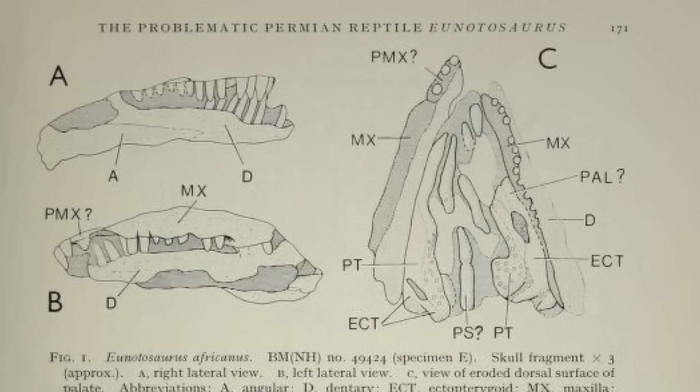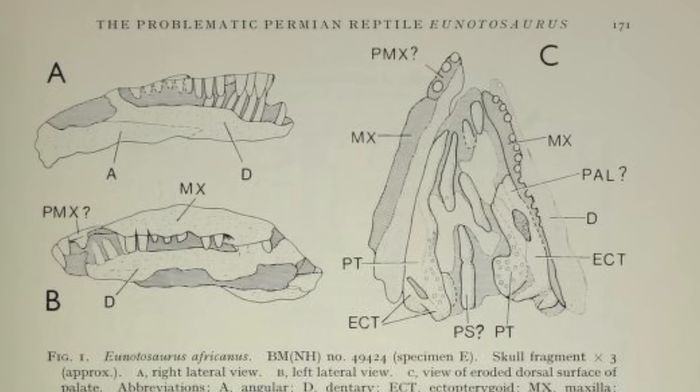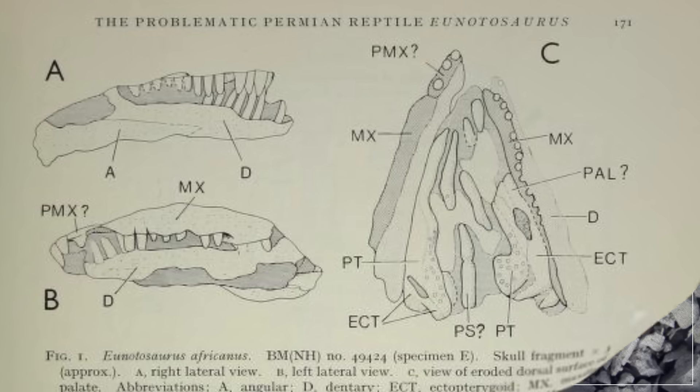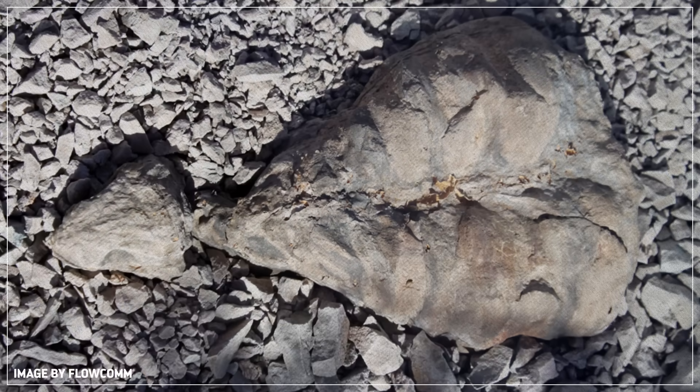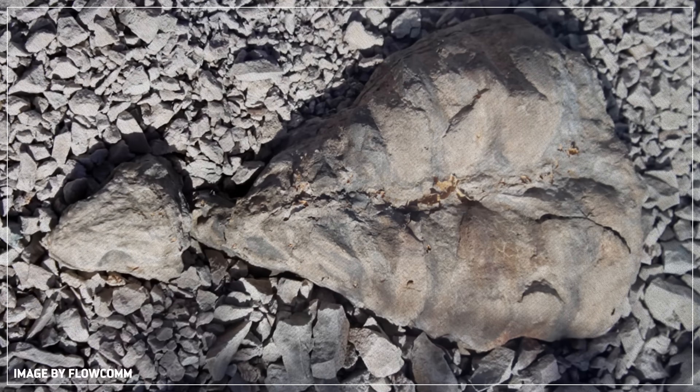The first fossil of this species was originally found back in 1892. But most experts at the time didn't think it was a turtle ancestor, because it didn't have a shell. But it did have wide, flat ribs! And modern paleontologists noticed that it bore more than a passing resemblance to Odontochelys.